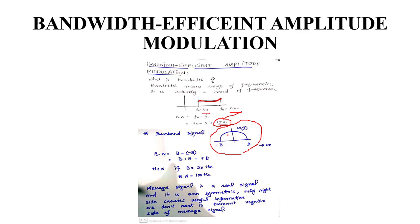If we want to find the bandwidth of this baseband signal: the lower frequency is -B and the high frequency is +B. So bandwidth = B - (-B) = 2B. This is the bandwidth of a baseband signal. For example, if B equals 100 Hz, the bandwidth is 2B = 200 Hz.